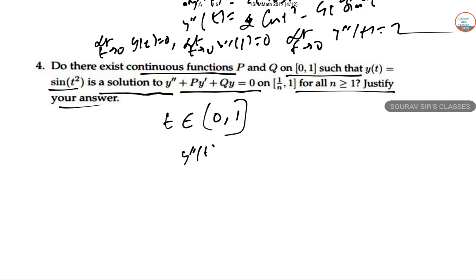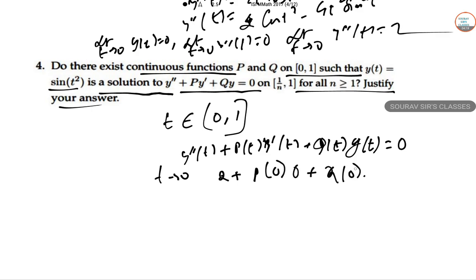For all t ∈ [0,1], we have y''(t) + P(t)y'(t) + Q(t)y(t) = 0. Taking the limit as t → 0: 2 + P(0)·0 + Q(0)·0 = 0, which simplifies to 2 = 0.